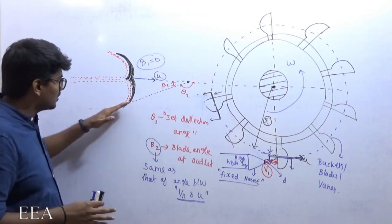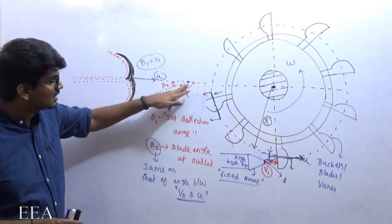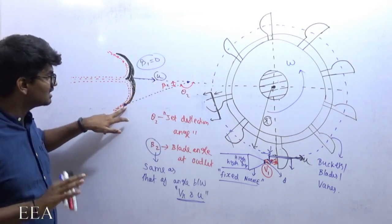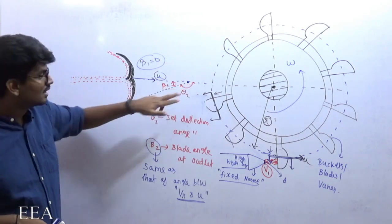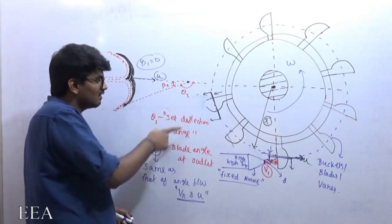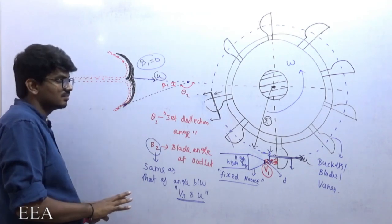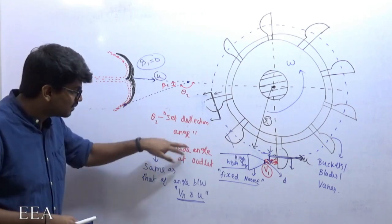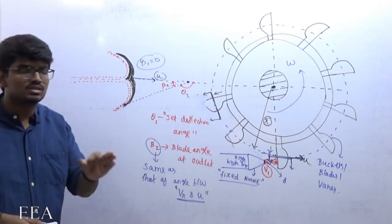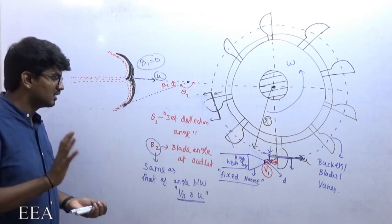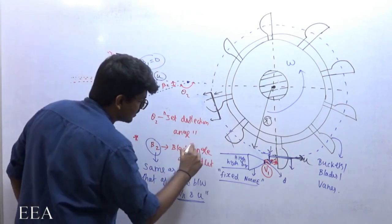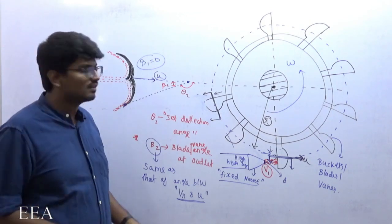The angle between relative velocity and blade velocity is always equal to the blade angle. To find the outlet blade angle, I draw a tangent at the exit — where it intersects the blade velocity direction, the acute angle is beta2 (blade angle) and the obtuse angle is the jet deflection angle theta. This blade angle is also called the vane angle, since blades can also be called vanes.